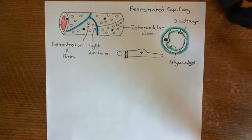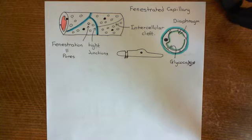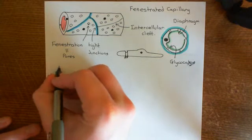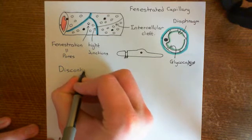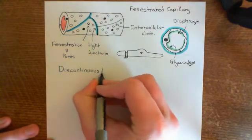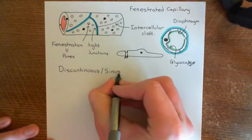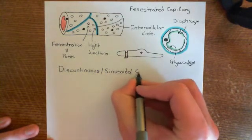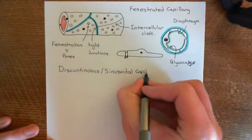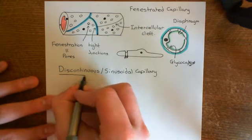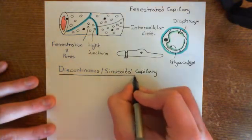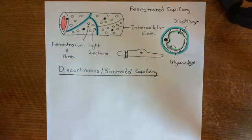The archetypal example of fenestrated capillaries is in the capillaries within a renal glomerulus. The final type of capillary is known as a discontinuous capillary, or sinusoidal capillary. These are generally found in the liver or the spleen — the liver being the archetypal example of where you find discontinuous or sinusoidal capillaries.